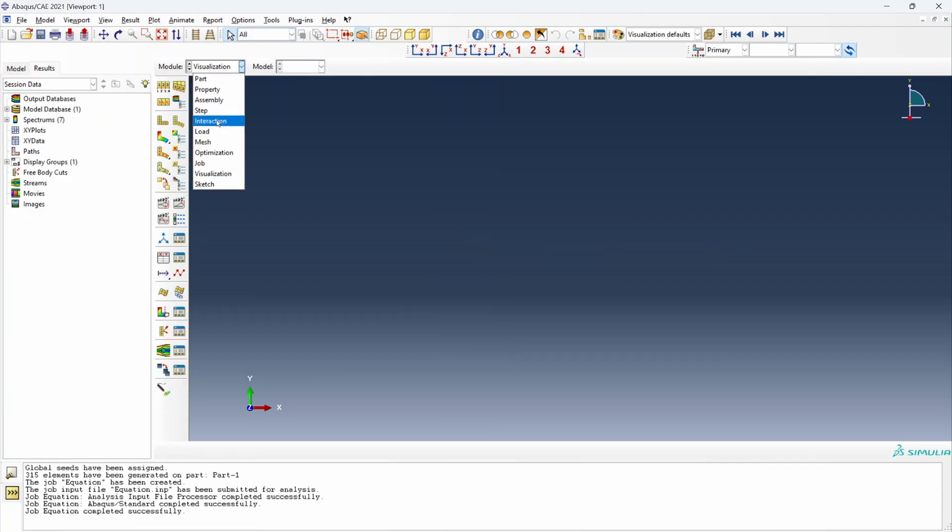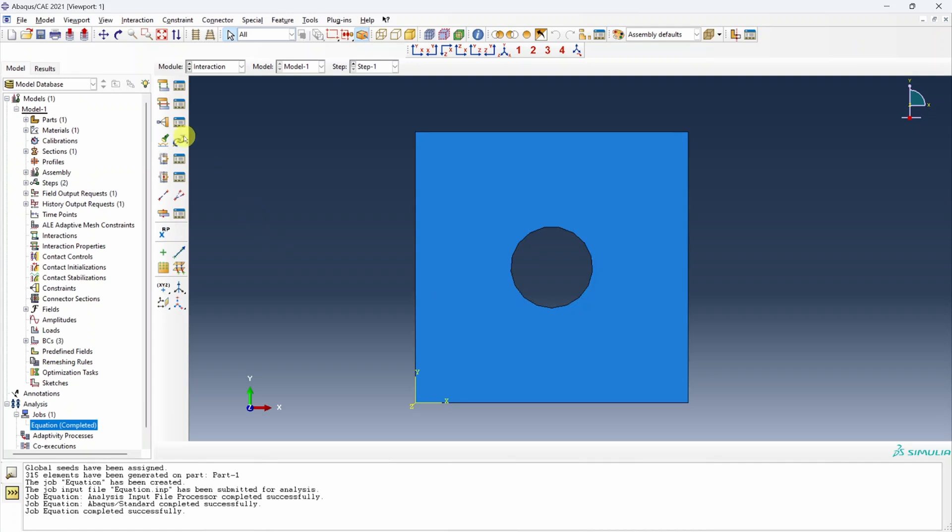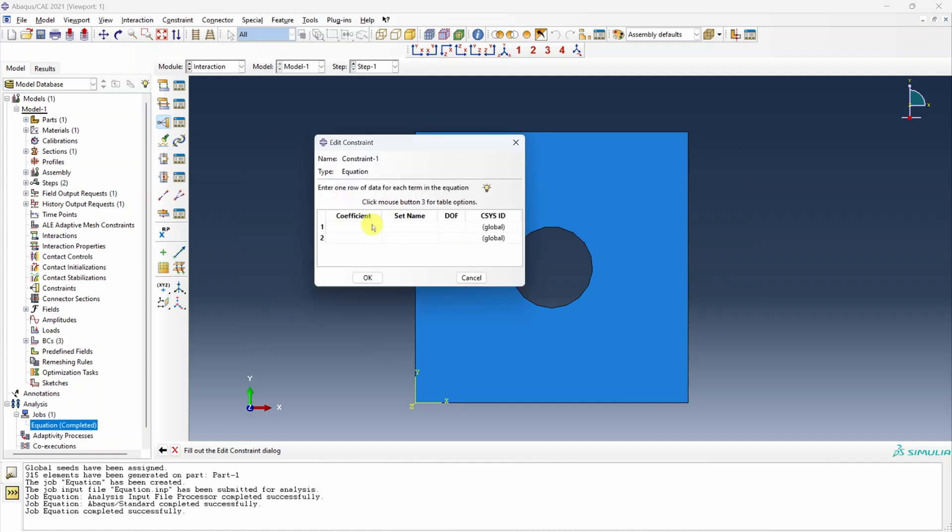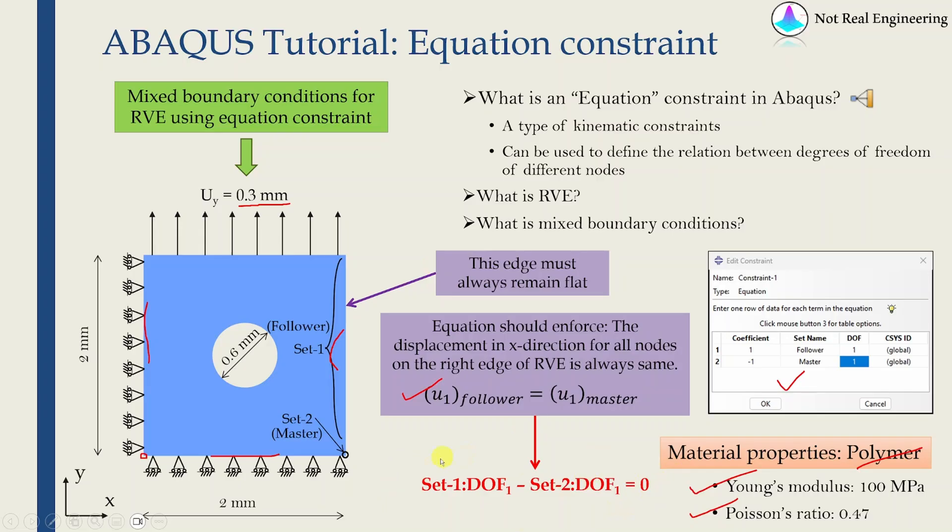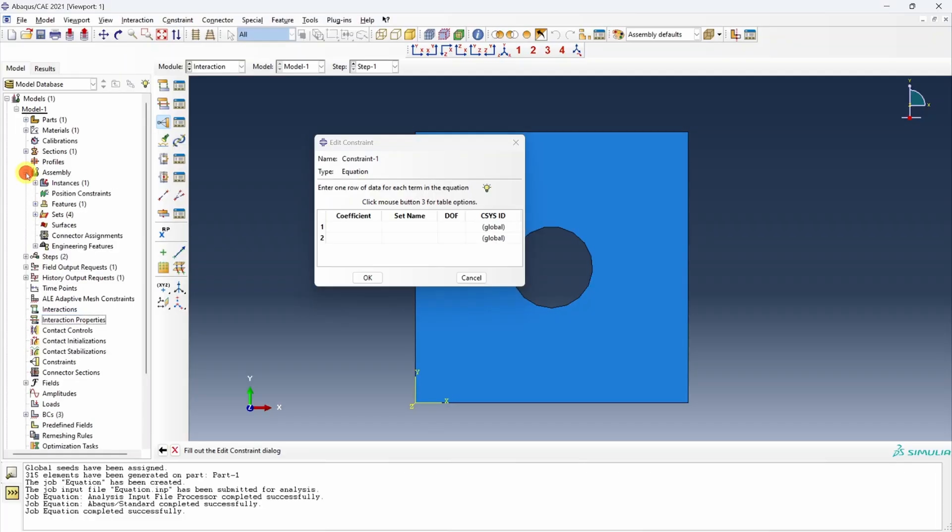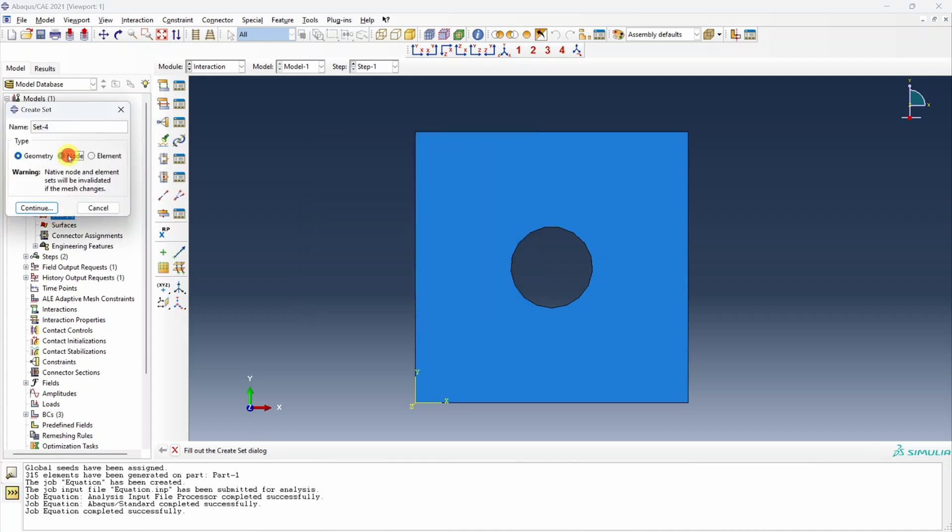Now let's apply equation constraint in the same model. For that we have to go to interaction. And in interaction you have to choose this icon over here which says create constraint. Or another option is you can directly double click over here. Then we have to look for equation constraint. It is over here. This is the table we have to fill. If we go back to the slide, this is the equation we want to fit in. You can see we will need two sets. So let's create those sets first.